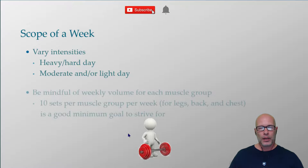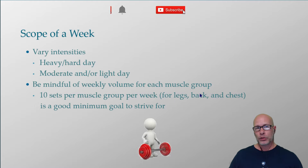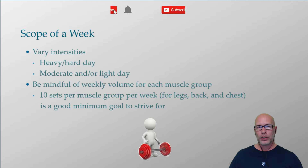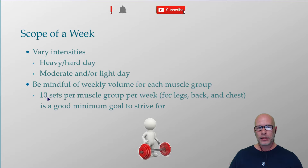The other thing is to be mindful of weekly volume per muscle group. Ten sets per muscle group per week — primarily for legs, back, and chest — is a good minimum goal. So if you're training each major muscle group twice per week, you'd want five sets for legs, back, and chest in each workout. The primary point is to be cognizant of how many sets you're performing per muscle group per week and try to get at least 10 to begin maximizing the benefits of strength training.